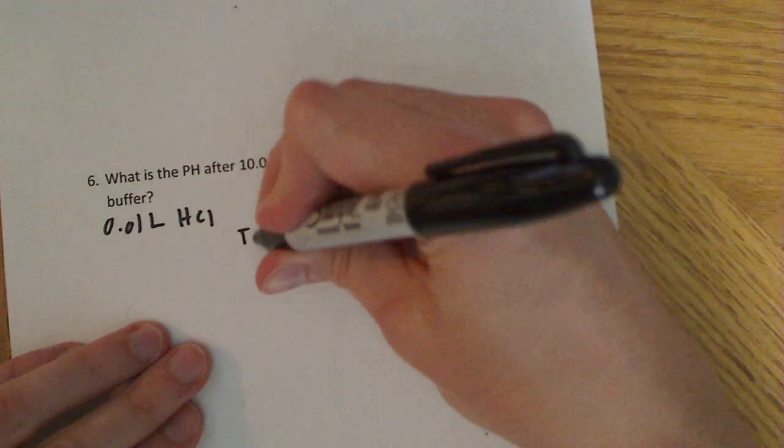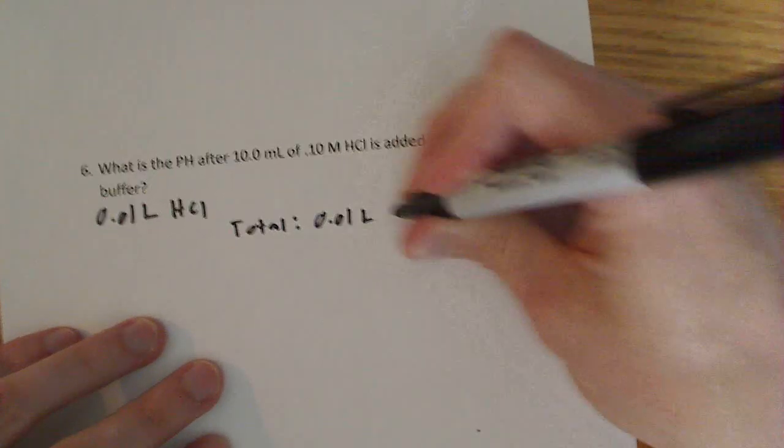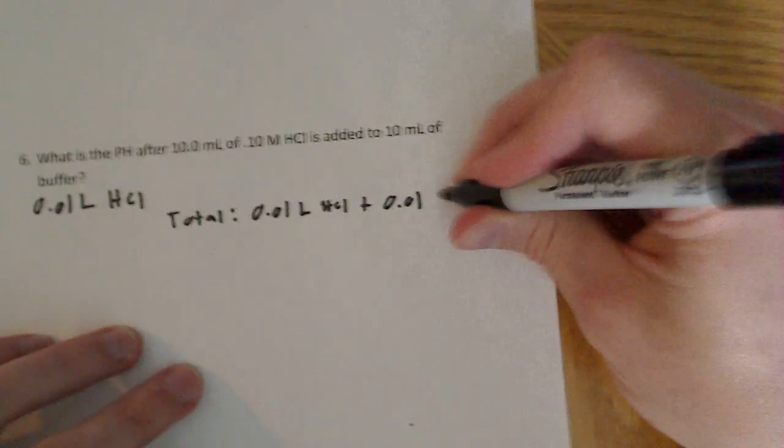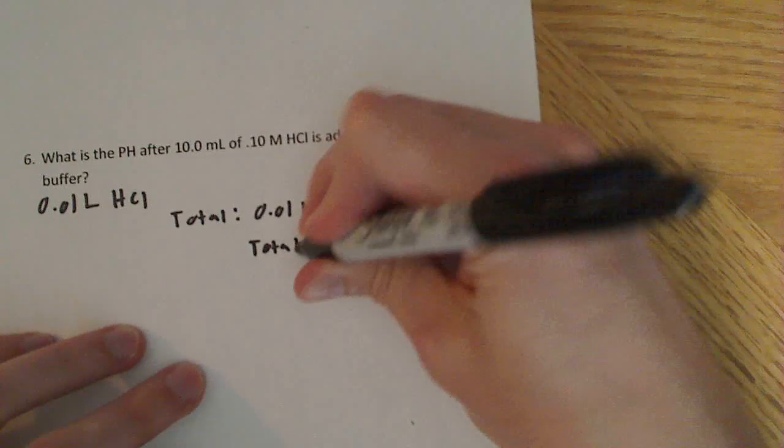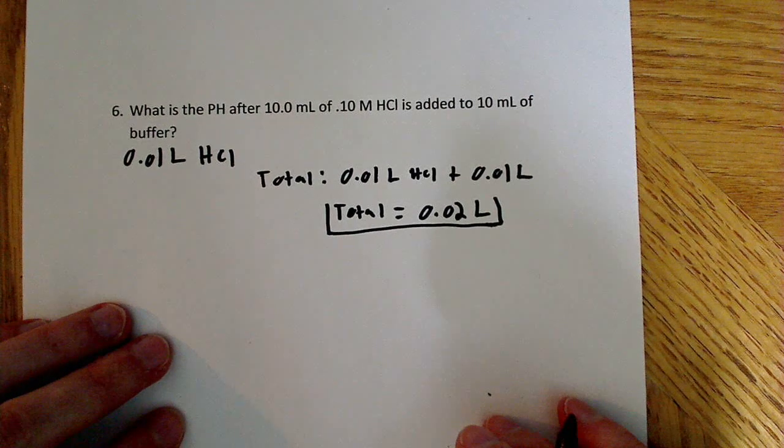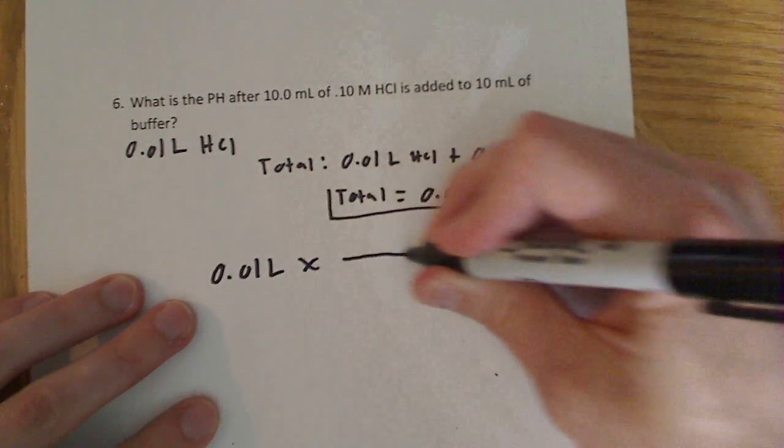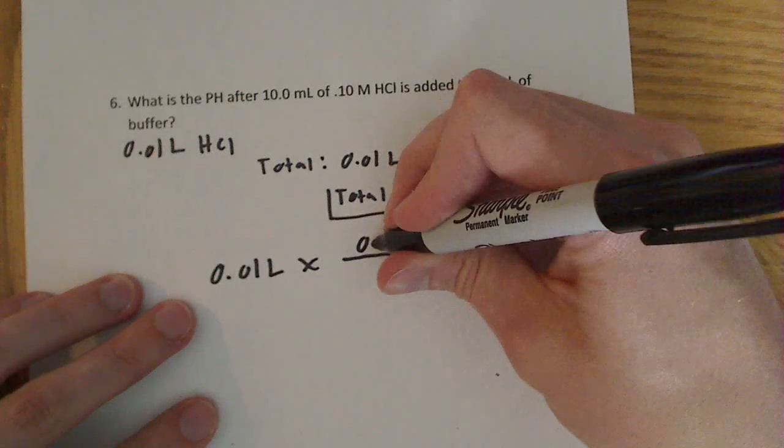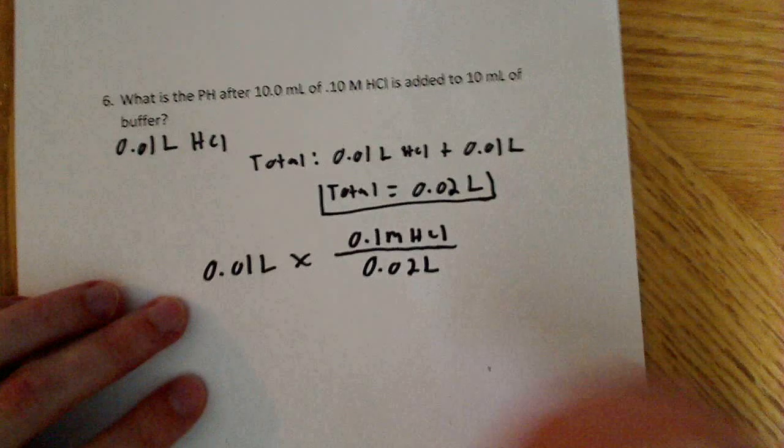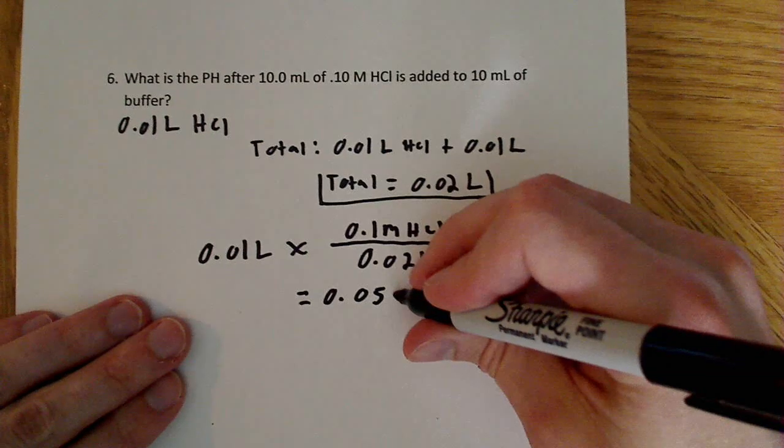And the total number of liters for the entire solution is the 0.01 liters of HCl and we're going to add that to, again, 0.01 liters of buffer. So the total is equal to 0.02 liters. So next thing to do, again, is to take the 0.01 liters, multiply that by the initial concentration of HCl which is 0.1 mole HCl, and divide that by the total for the new solution. So when you do all that you'll find that this equals 0.05 moles of HCl.